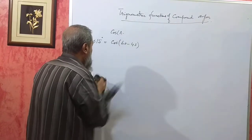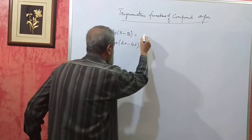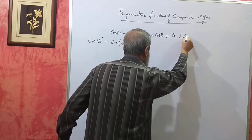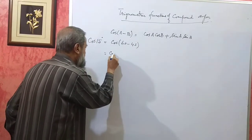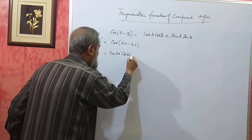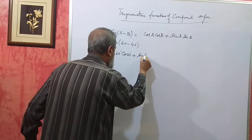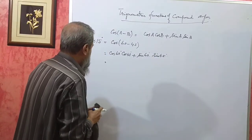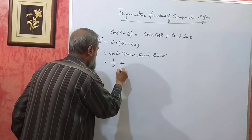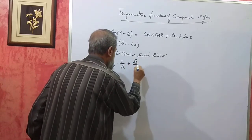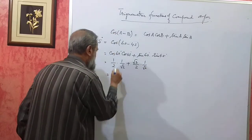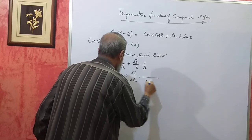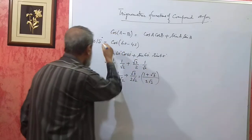Here, I will have to use the relationship cos of A minus B. Cos of A minus B — here it is the difference between two angles. The expansion of this is cos A cos B plus sin A sin B. So it will be cos 60 cos 45 plus sin 60 into sin 45. Cos 60 is half, into 1 by root 2, plus sin 60 is root 3 by 2 into 1 by root 2. So that gives 1 by 2 root 2 plus root 3 by 2 root 2. The LCM here is 2 root 2, so you get 1 plus root 3 over 2 root 2. This is the answer for cos 15 degree.